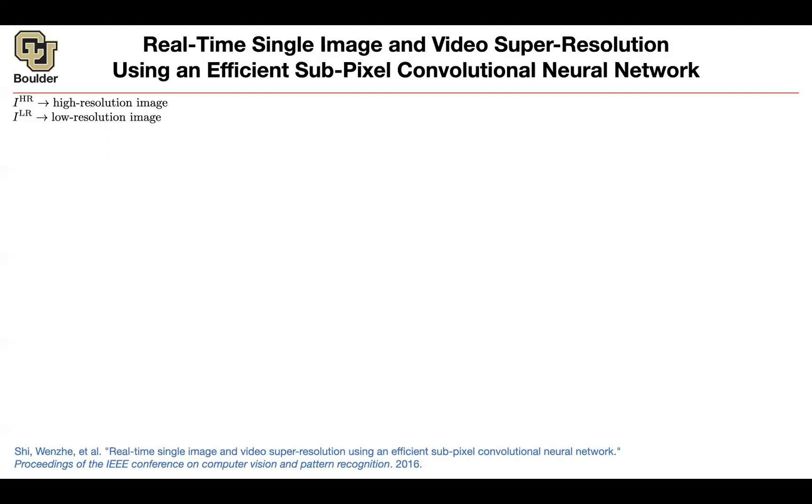You have the corresponding low-resolution image. How do you obtain your low-resolution image? You take your high-resolution image, push it through a Gaussian filter, and then downsample it - drop the pixels you don't need.